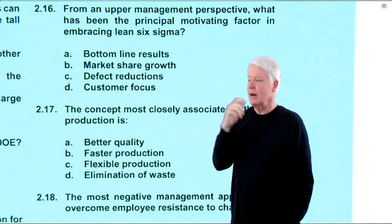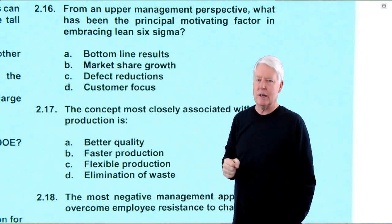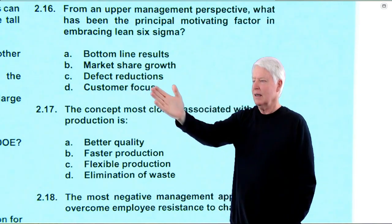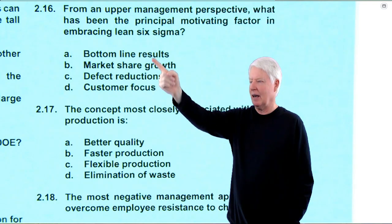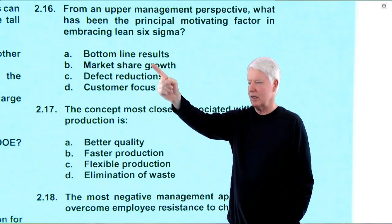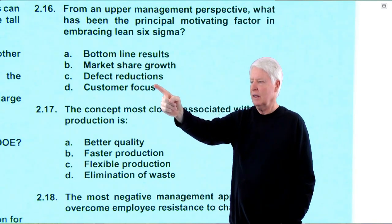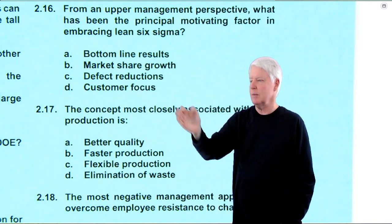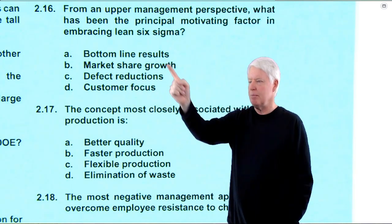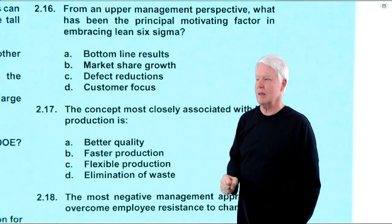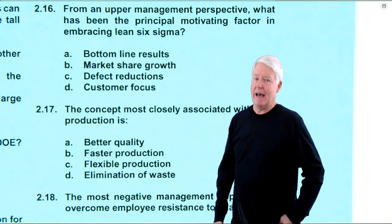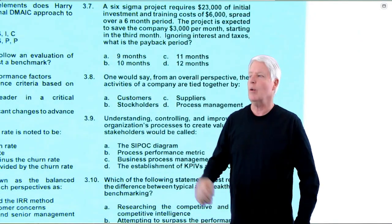Market share growth without increased profits still leaves management in trouble. Defect reduction is a subcategory of bottom line results. Customer focus is important to ASQ, but if it doesn't create bottom line results, upper management is in trouble. All the other options are subcategories of A — bottom line results is the most general. If it says upper management, think: they have to make money.